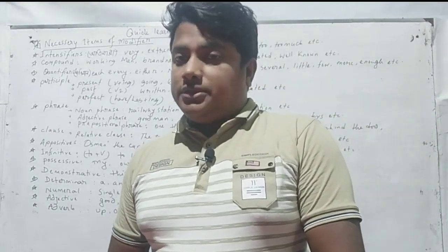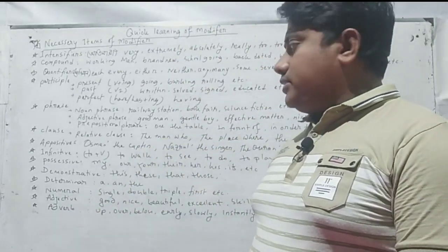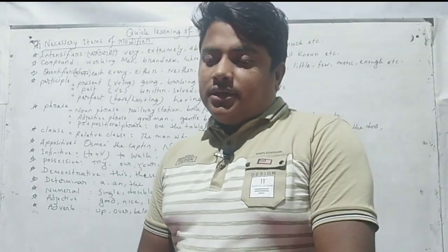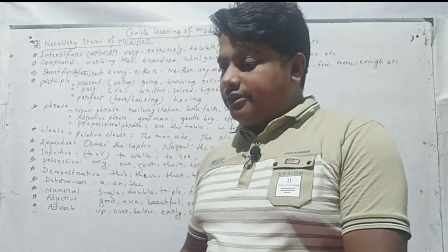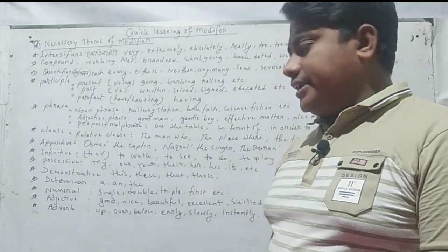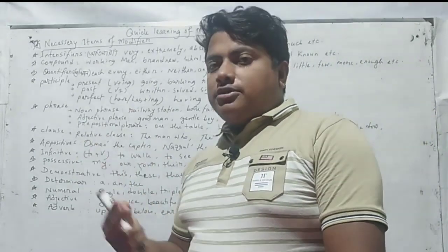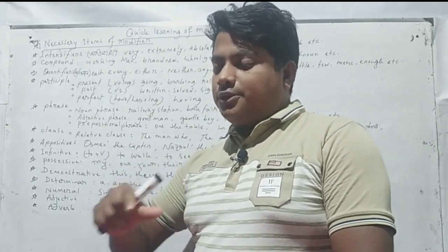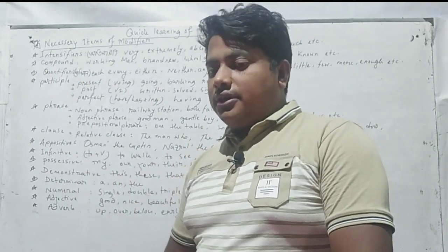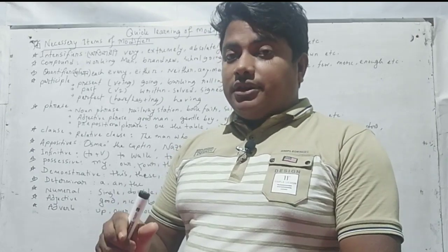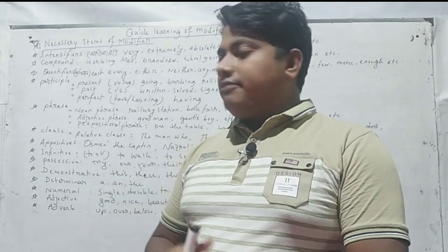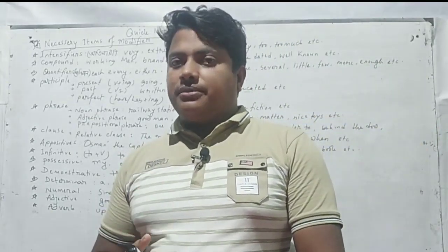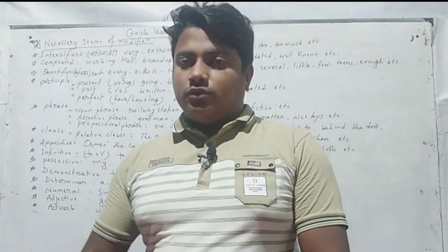Prepositional phrases start with a preposition followed by a noun or other words. Examples: on the table, in order to, behind the door. Infinitive phrases include 'to go there' — 'to go' alone is an infinitive, but 'to go there' is an infinitive phrase. Similarly, 'to see them' is an infinitive phrase.